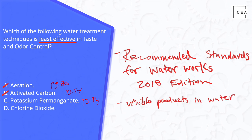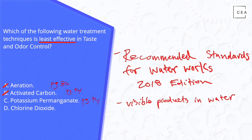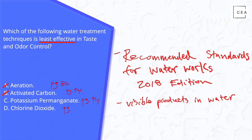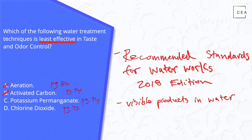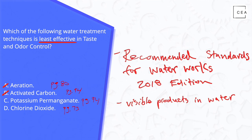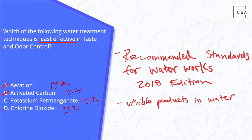I then search chlorine dioxide in the document and find it on page 73. Chlorine dioxide is recommended as a water treatment technique to control taste and odor, so I cross that one out as well.